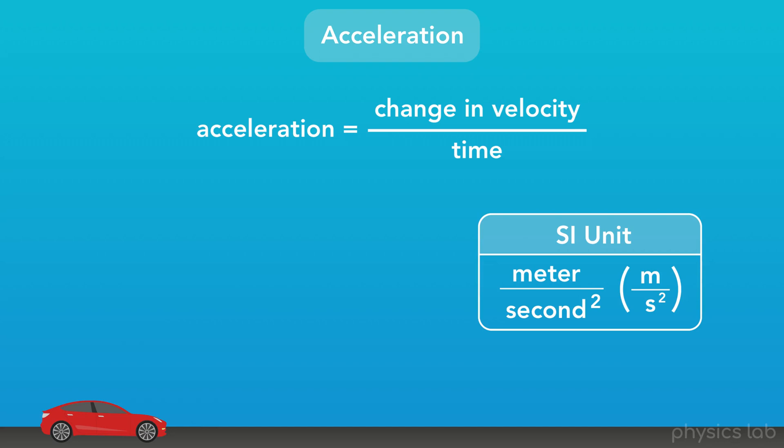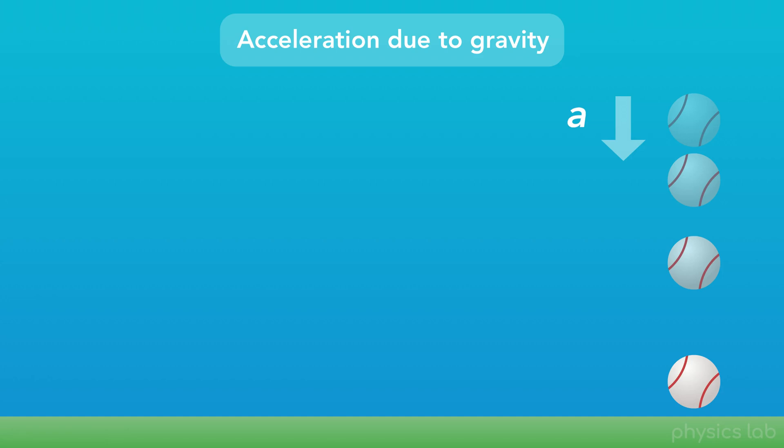And we'll be representing acceleration with the variable a. So, a car is one example of an object that can accelerate. What's another example? Well, it turns out that if you drop an object, like a ball, it'll actually accelerate as it's falling. This is what we call the acceleration due to gravity.